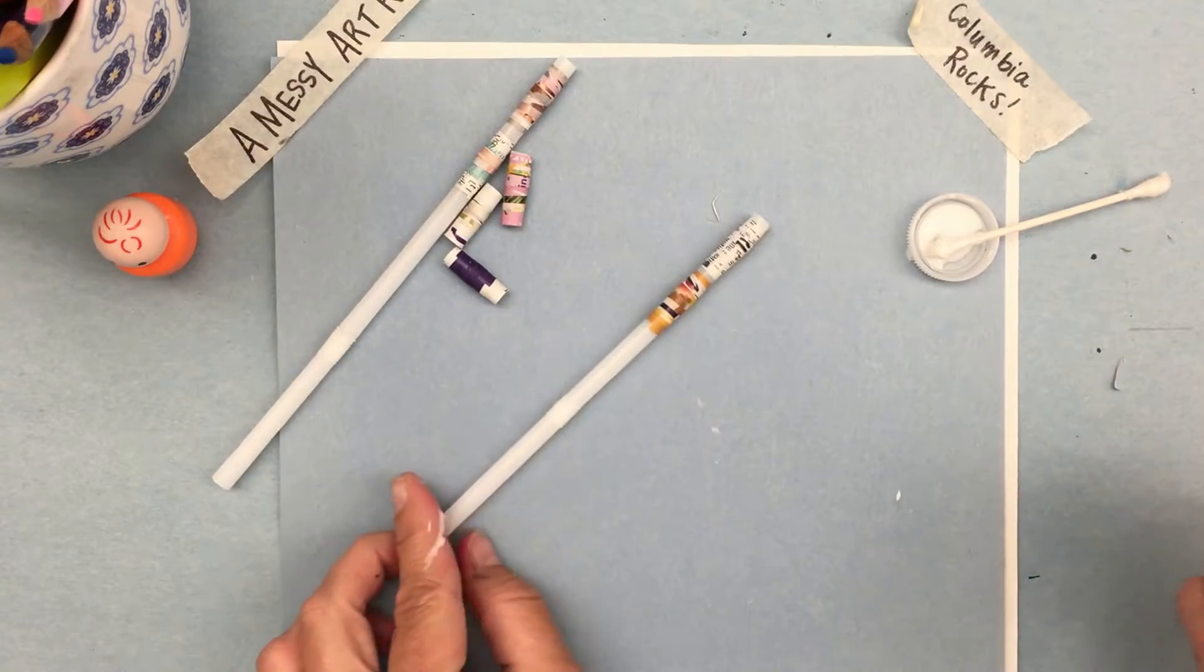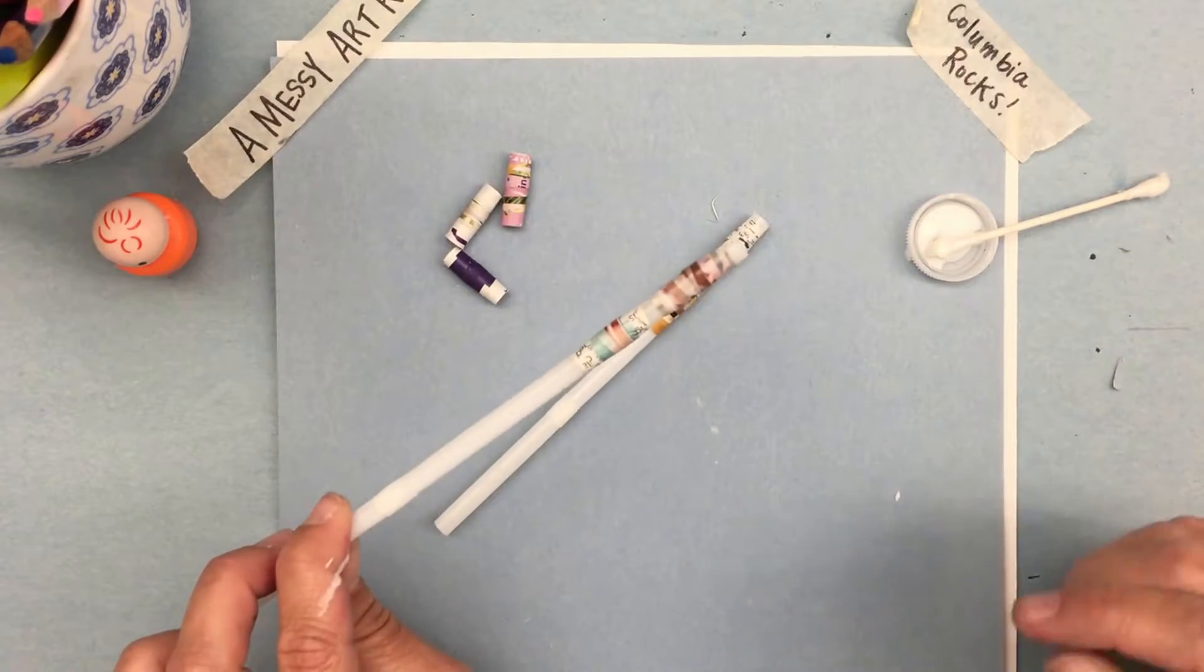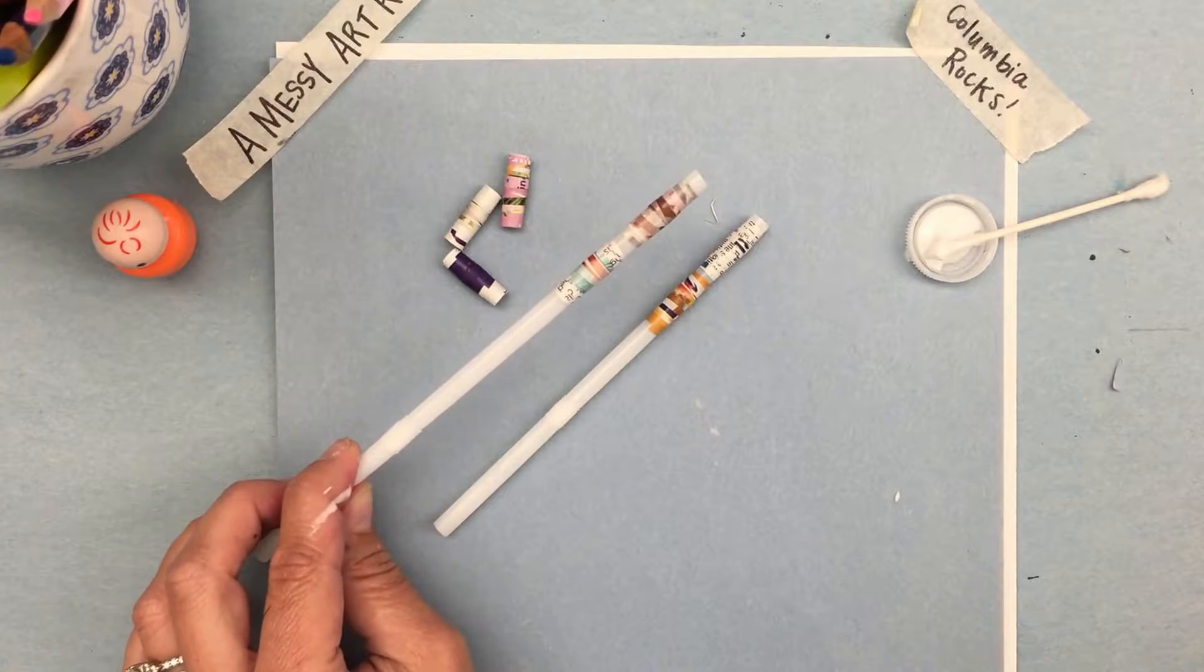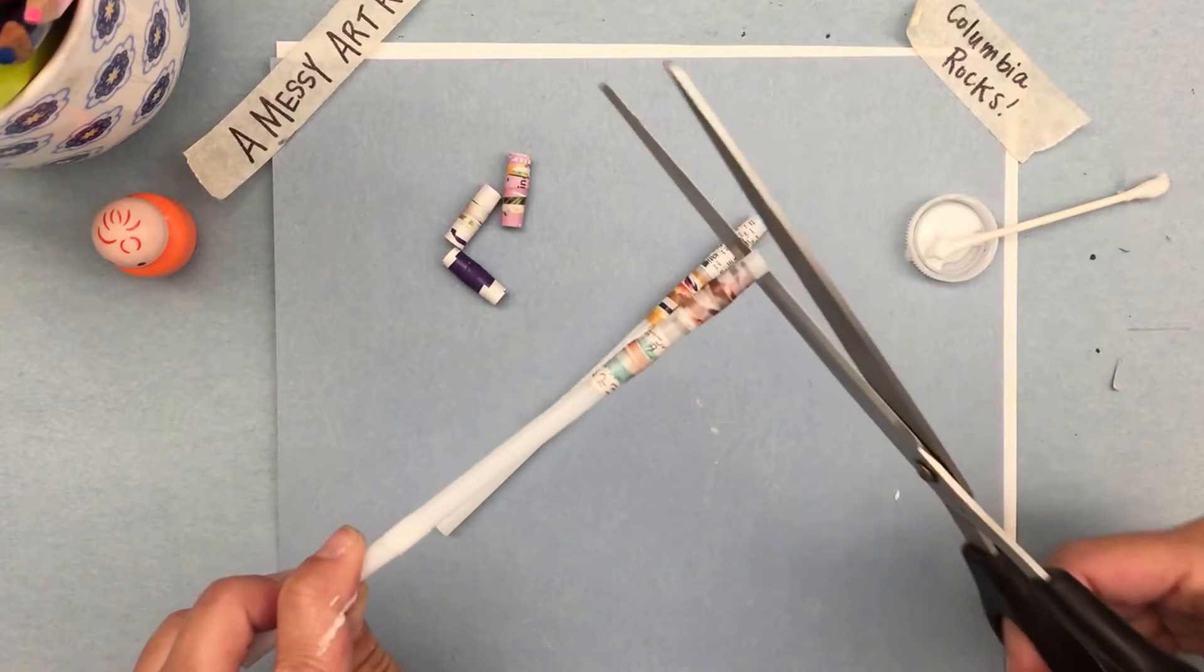Now those two beads are finished. These beads I made earlier today so they're already dry. You probably want to let them dry for about 20 minutes. They dry rather quickly but if you take them off too early they can change shape.